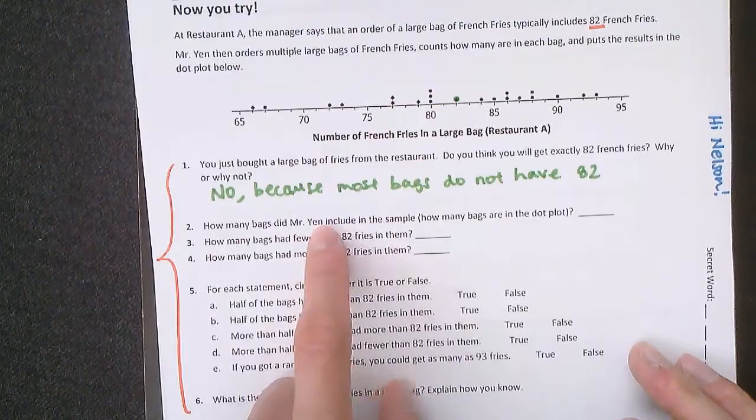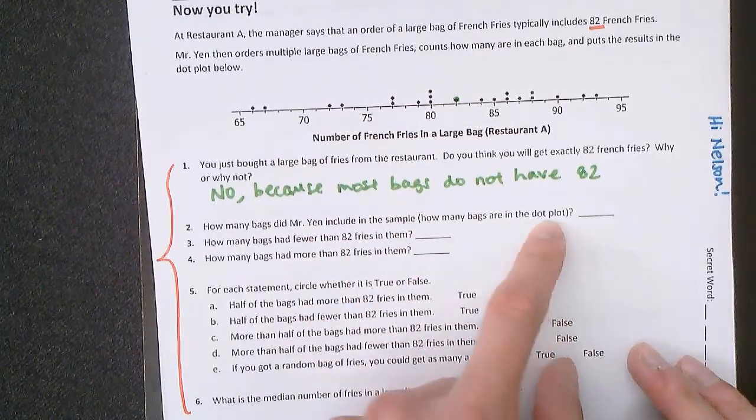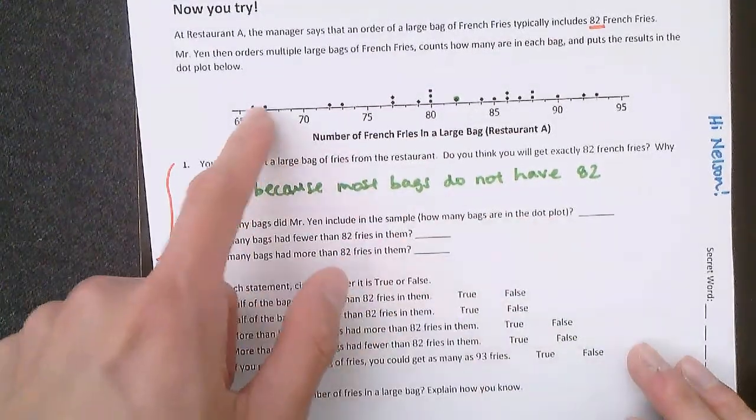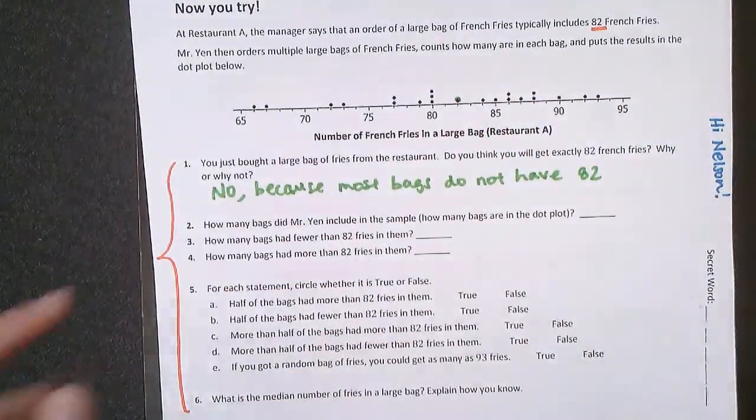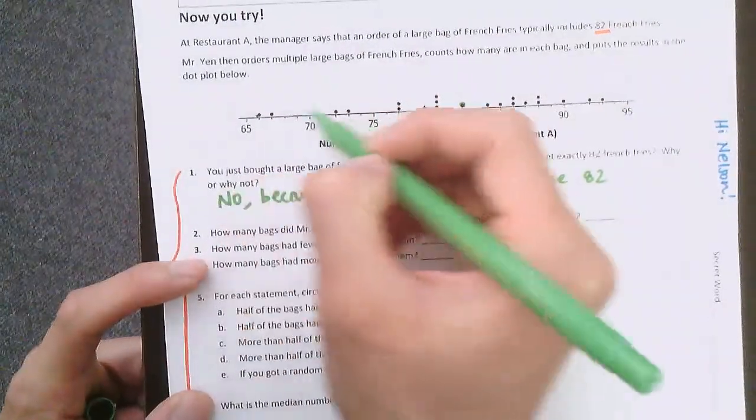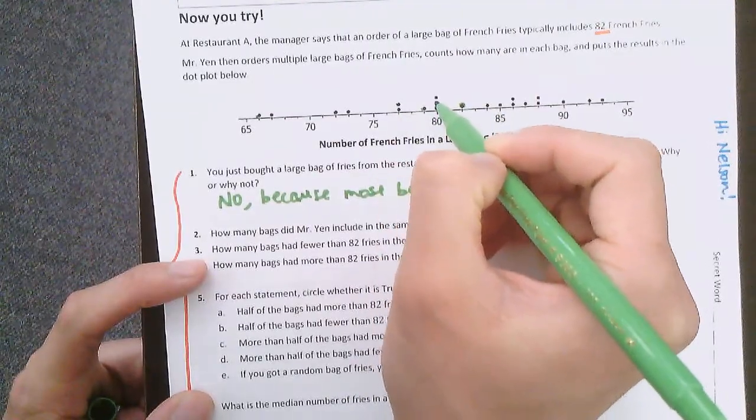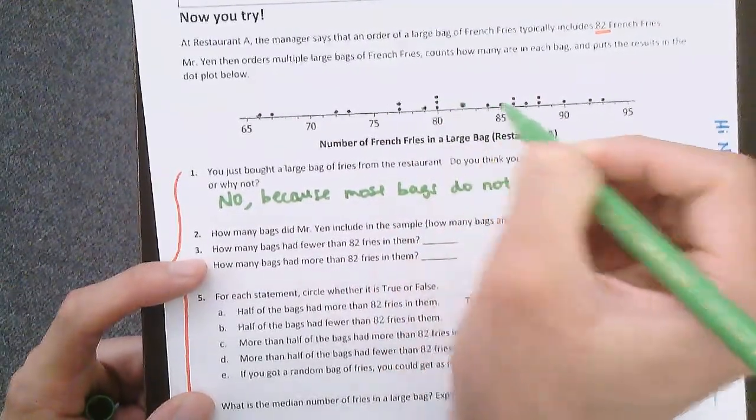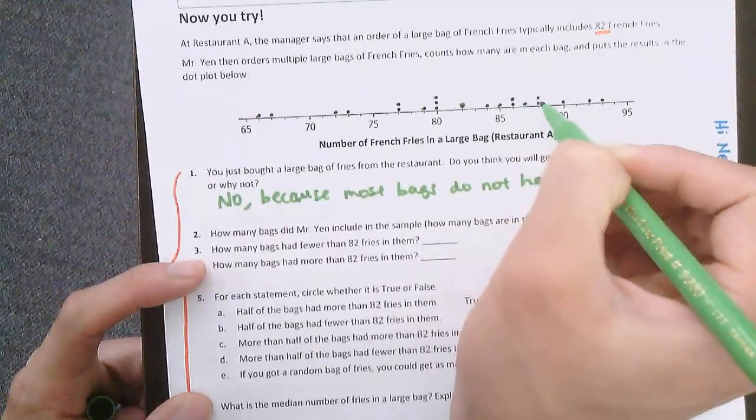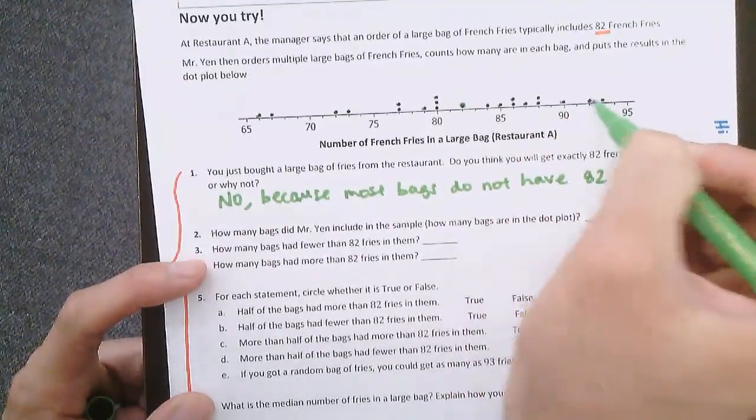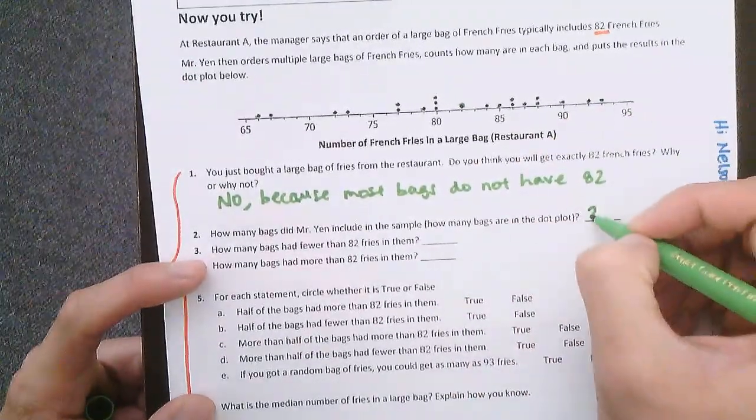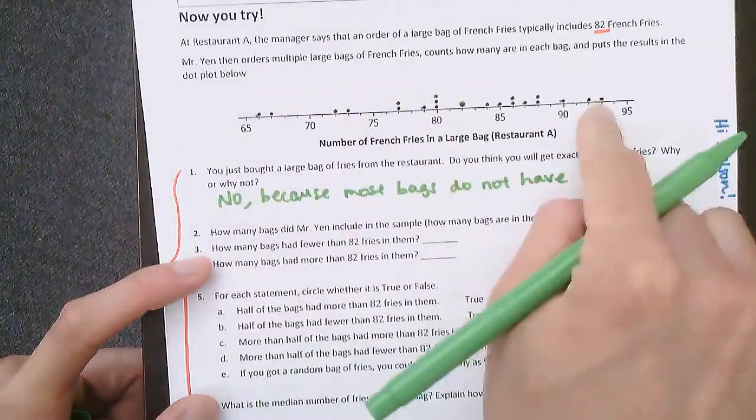How many bags did Mr. Yen include in this sample? So for this, what you have to do is you have to count how many dots there are. That's how many bags there were, so let's start counting. 1, 2, 3, 4, 5, 6, 7, 8, 9, 10, 11, 12, 13, 14, 15, 16, 17, 18, 19, 20, 21. There are 21 bags, that's why there's 21 dots in this graph.